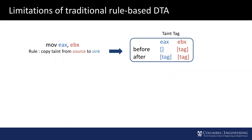Existing dynamic taint analysis tools are based on predefined taint propagation rules. As a program executes each instruction, these rules propagate taint tags that encode the information flow. For example, suppose we want to track information flow through the move instruction. Before the move instruction is executed, the taint source register EBX has a taint tag, and the taint sink register EAX has no taint tag. After the execution, dynamic taint analysis will propagate the taint tag from source to sink.